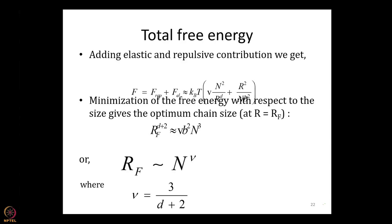When I rearrange, there are negative terms from R squared over R to the D and positive terms from R squared over R, which work out correctly. Then R to the power D plus two scales as N cubed, giving the beautiful Flory result: R_F scales as N to the power ν, where ν is called the Flory exponent, equal to 3 divided by (D plus 2). In D equal to 3, this becomes 3 over 5.